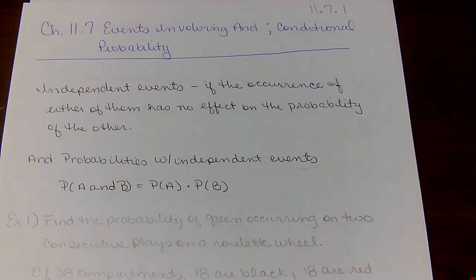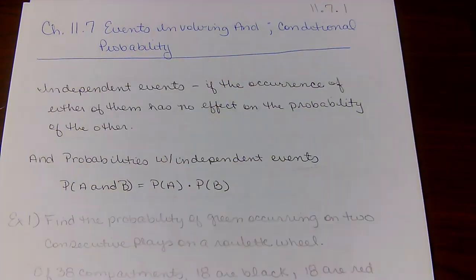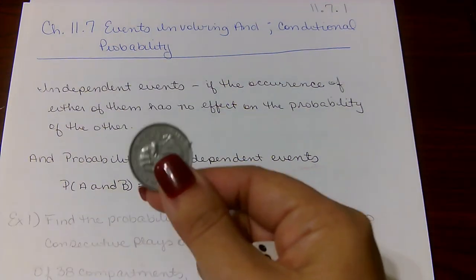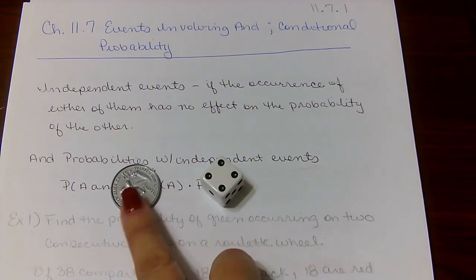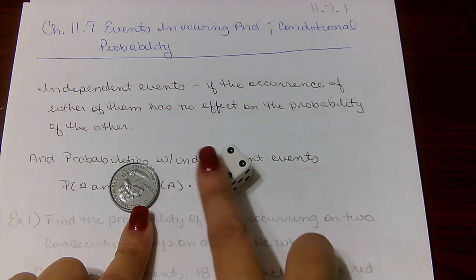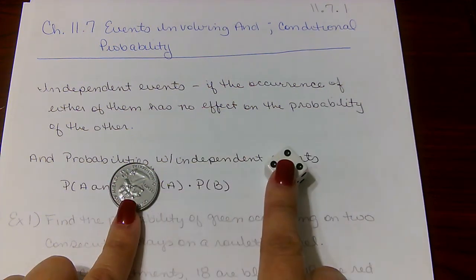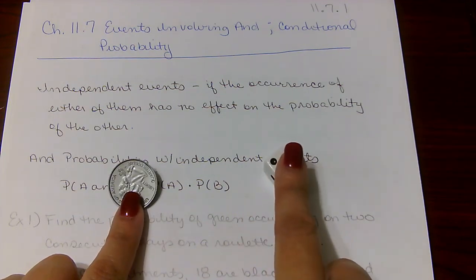Let's begin with independent events. Independent events is when the occurrence of an event has no effect on the probability of another event. An example would be if I flip this coin, will it have an impact if I roll this die? Since this coin does not impact the outcome of this event, these are referred to as independent events.